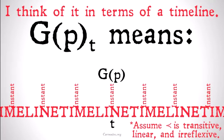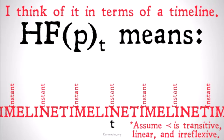GPt means that at time t, GP is true — or, at time t, it will always be the case that p. So for every instant after now, p is true. Hopefully that's clear.